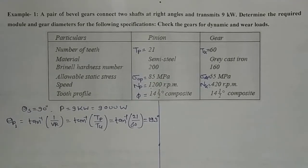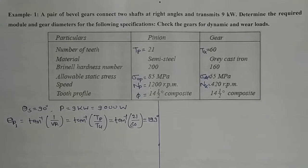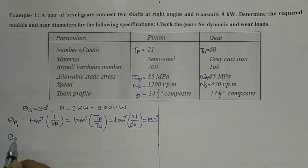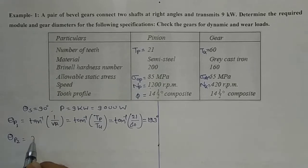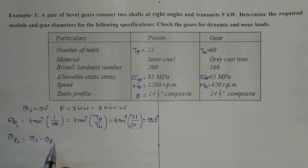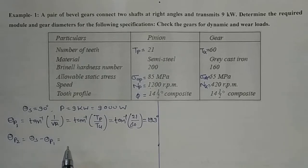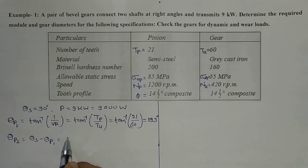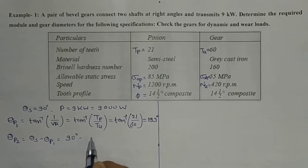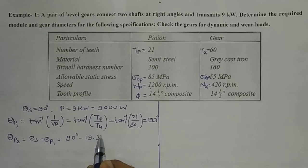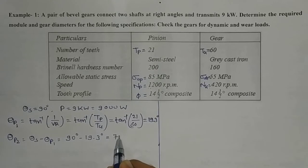Similarly, the pitch angle for the gear theta_p2 is equal to theta_s minus theta_p1, because the shaft angle theta_s equals theta_p1 plus theta_p2. So theta_p2 equals 90 degrees minus 19.3 degrees, giving theta_p2 equal to 70.7 degrees.